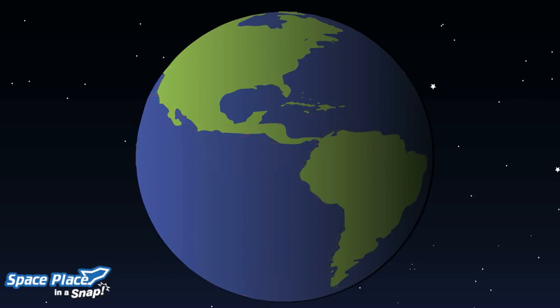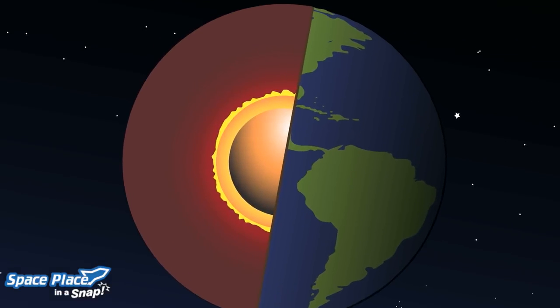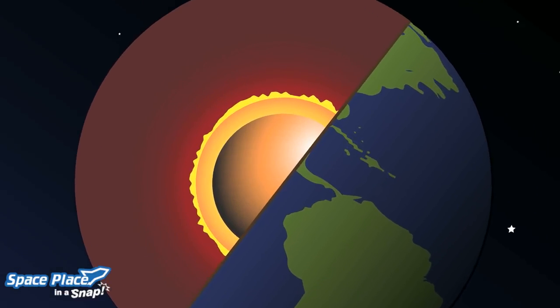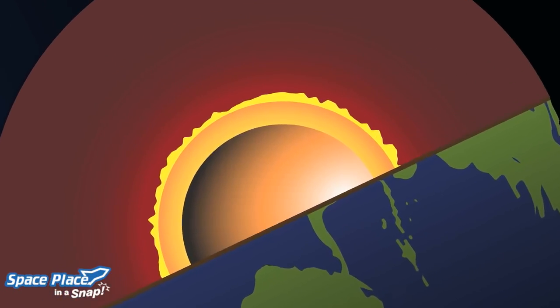These plates move because of heat from Earth's core. Earth's radioactive core generates an immense amount of heat that keeps our planet from completely cooling over.